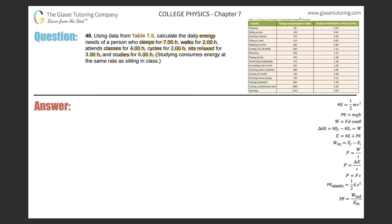Studying consumes energy at the same rate as sitting in class. Let's take each of these in pieces. The table on the upper right gives us power values in watts. We'll use the equation that power equals work divided by time, so work equals power times time. To find the energy used in a process like sleep, we need the duration and the power required. Let's highlight sleeping in the table.